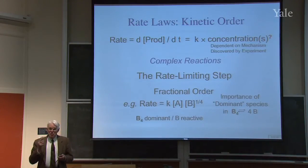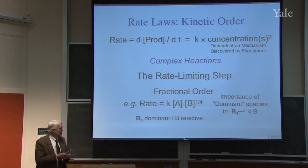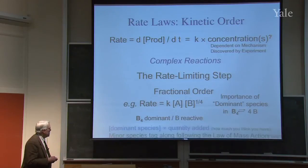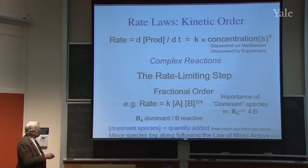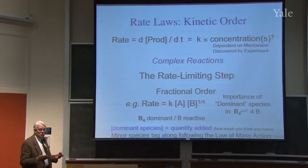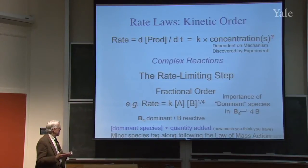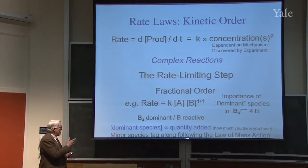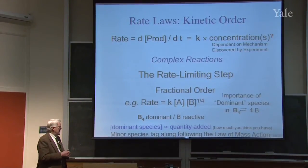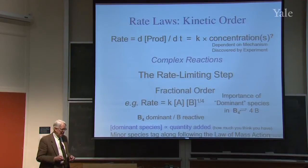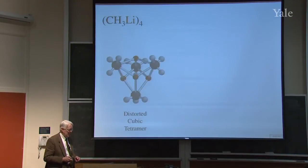By how much do you increase the concentration of the monomer B that's in equilibrium with B4? The dominant species is proportional to how much you add — that's how much you think you have. But the minor species tags along following the law of mass action.